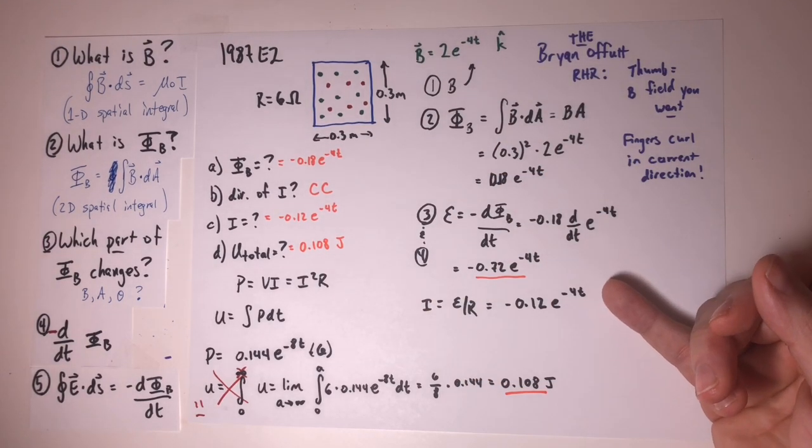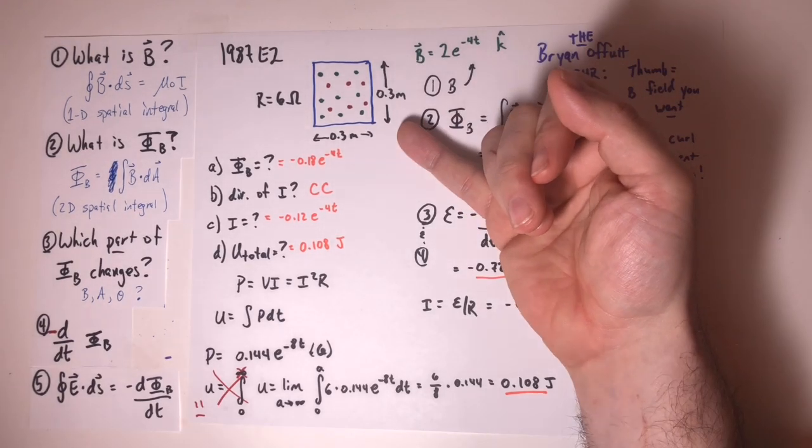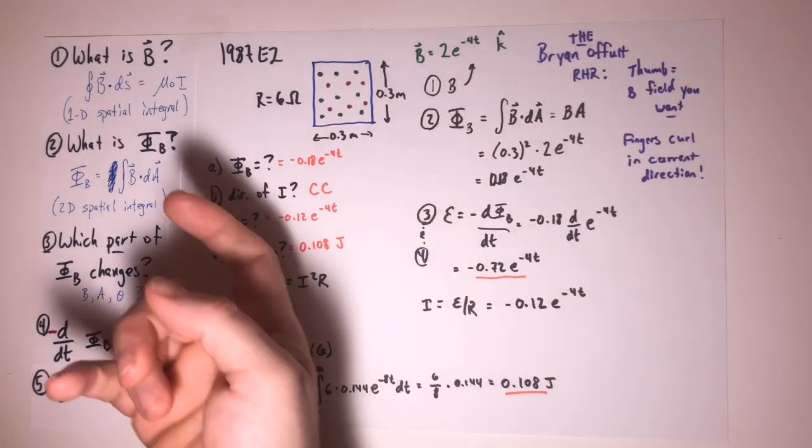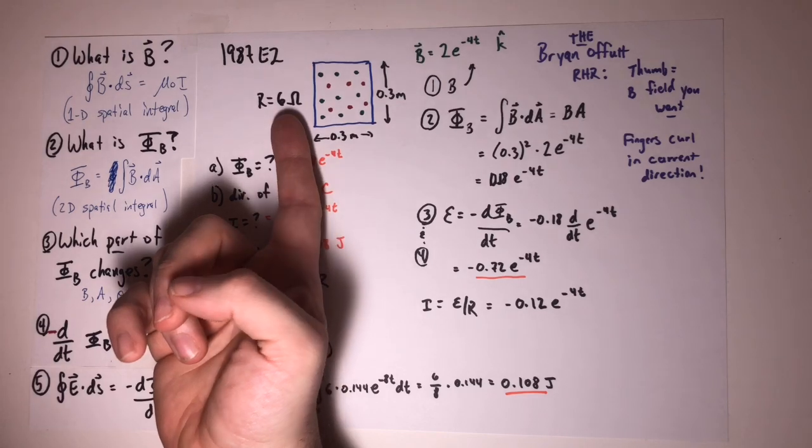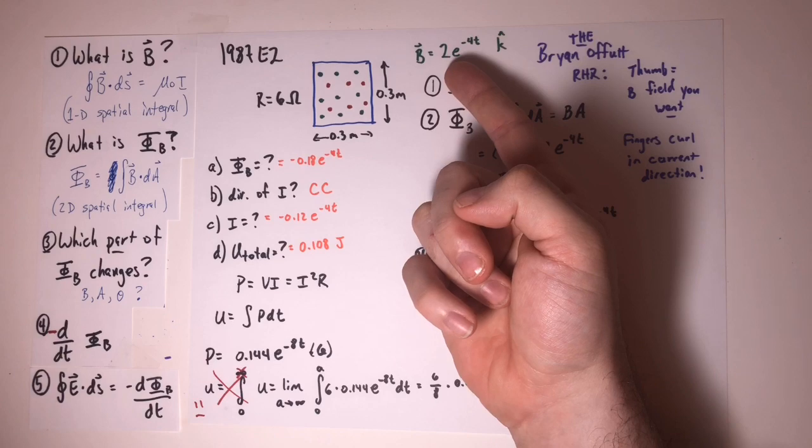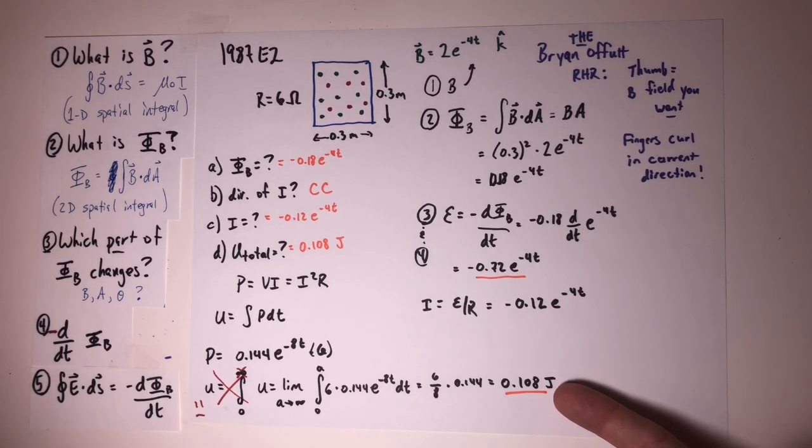The last thing I'll point out about this problem is that I like that it's numeric because it gives you a chance to get a gut feel for what kind of numbers we're talking about here. This is, you know, a lab table-sized loop, 30 centimeters on a side, and this is a reasonable resistance for a wire that's got one or two or a few turns in it to have. This is a fairly strong magnetic field. Two Teslas is pretty strong. And yet, despite that being a strong magnetic field, you only dissipated a tenth of a joule of energy in this circuit for all time.